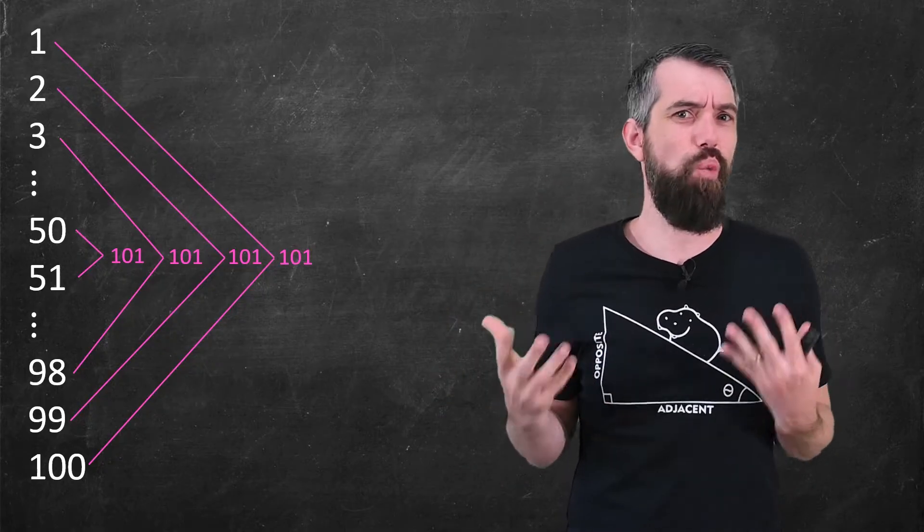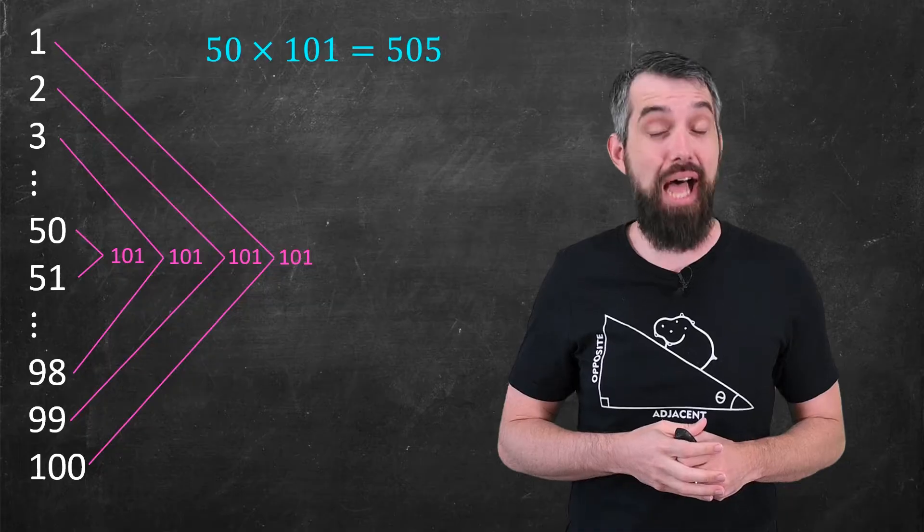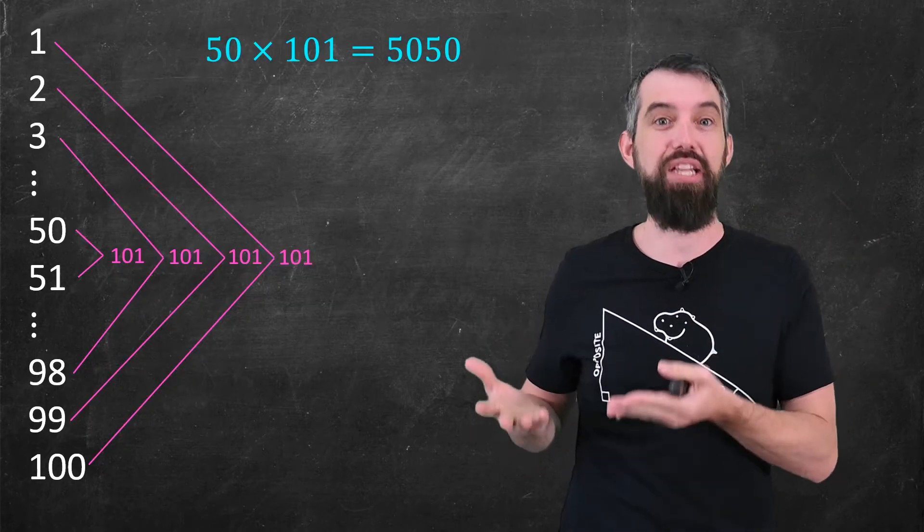So as a result, it's just 101, well, 50 times, because only half of the numbers are needed to get each pairing.